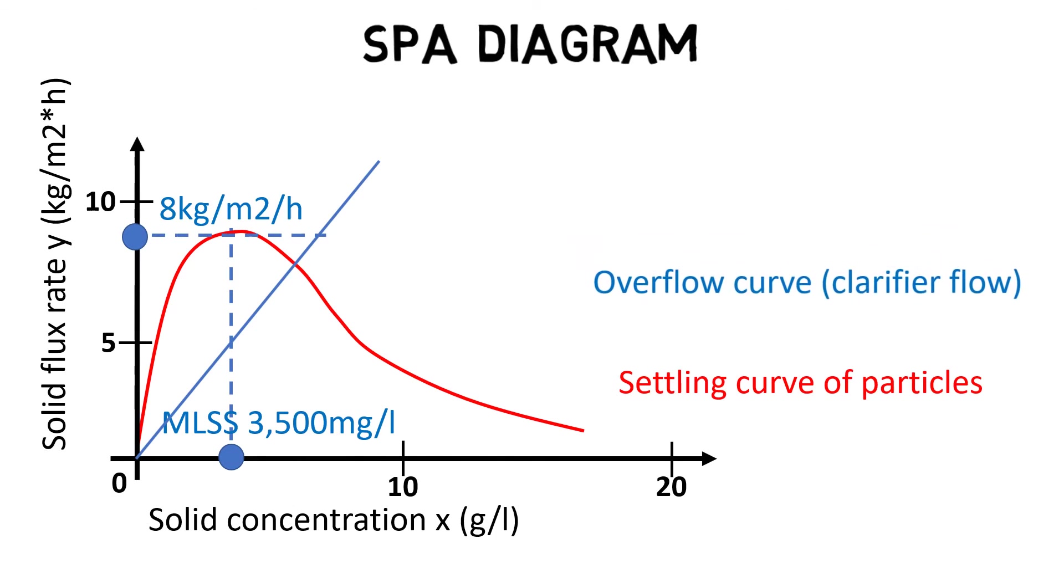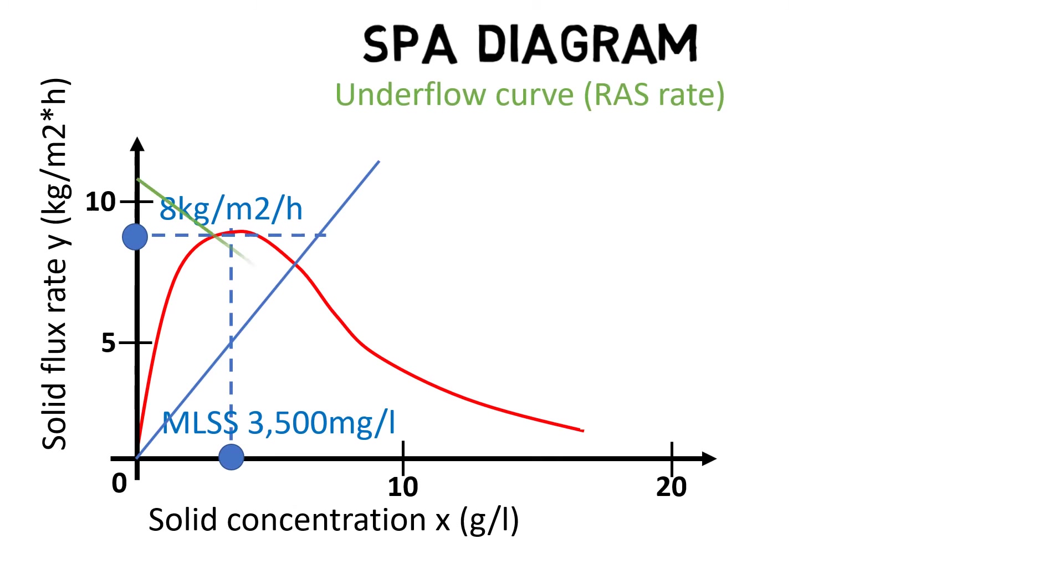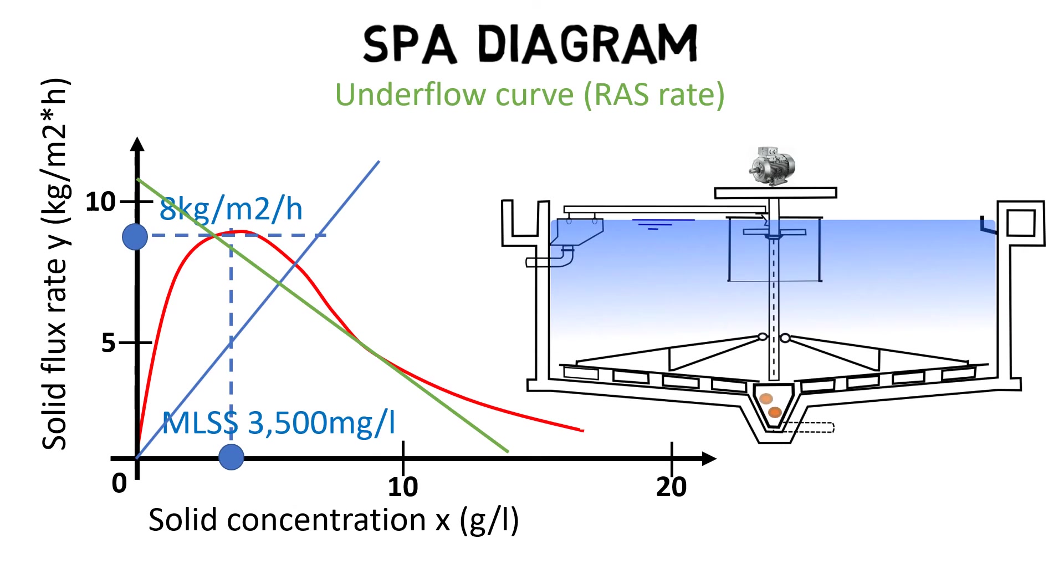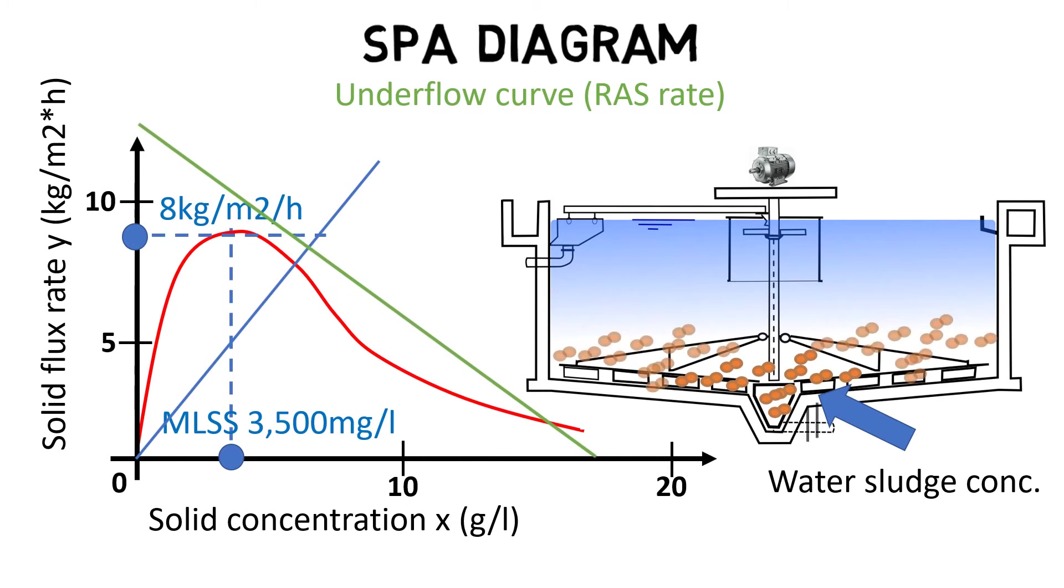Three, the underflow line shows the solids loading rate in relation to the expected underflow concentration. The underflow concentration is the water sludge concentration on the bottom of the clarifier. By increasing or decreasing the RAS, return activated sludge rate, the curve can be moved up or down. More solids from RAS result in a higher MLSS, and less solids from RAS result in a lower MLSS.